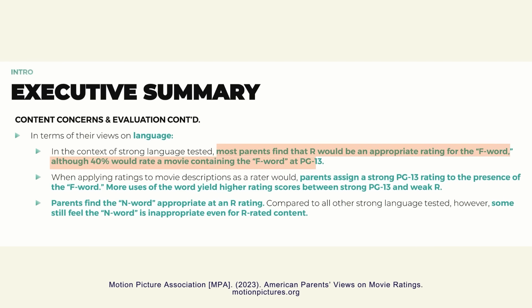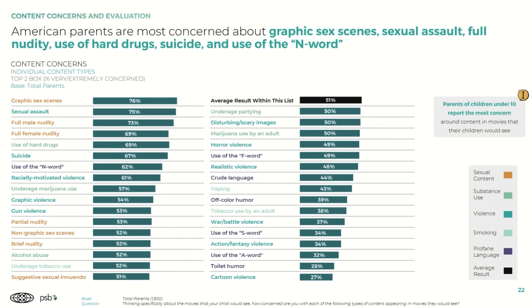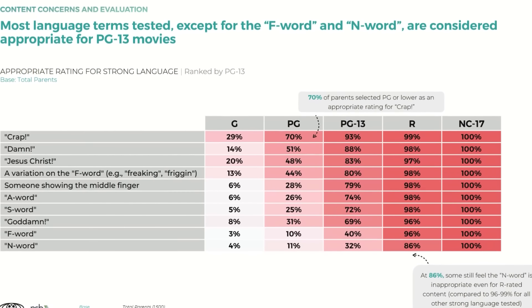Despite critics who argue that these systems don't necessarily make evidence-based decisions with respect to child development, the age-appropriate system seems to be the best we can do for now. In the US, the MPA gives the power to a small group of parents to rate individual films and media. But when they ask a larger group of parents in the real world, there's not an overwhelming amount of consensus. In a recent study of parent opinions by the MPA, most parents find that R would be an appropriate rating for the F word, but 40% would rate a movie containing the F word as PG-13. The study also finds that profane language other than the N-word is much less of a concern to parents than nudity and hard drugs — and most swear words except the F word and the N-word are considered appropriate for PG-13 movies.